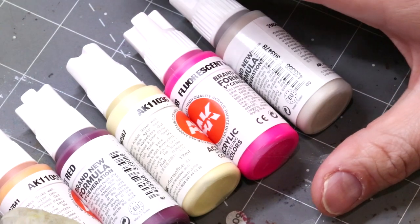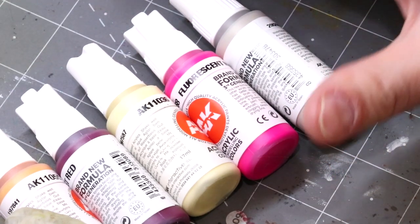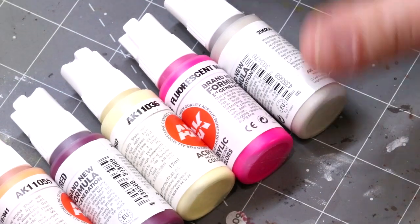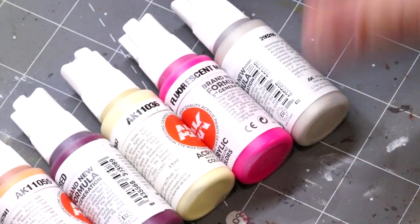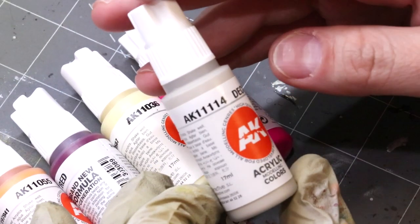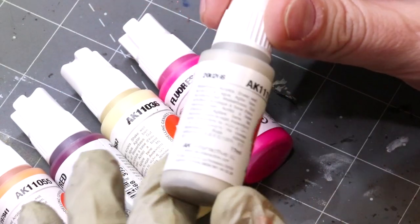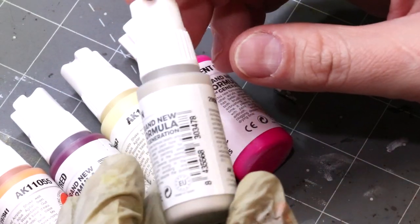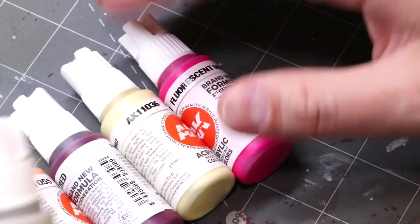I got all mine from Michigan Toy Soldier where they are four dollars a piece for the bottle, so they're pretty standard price for a standard amount of paint. These are just your standard 17 milliliter dropper bottles at least as far as size.